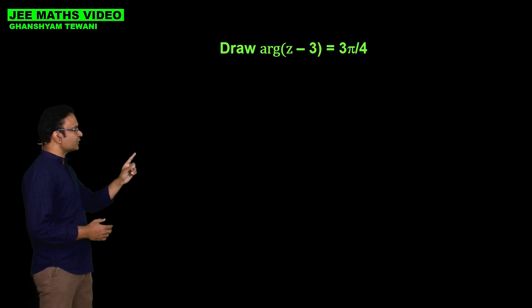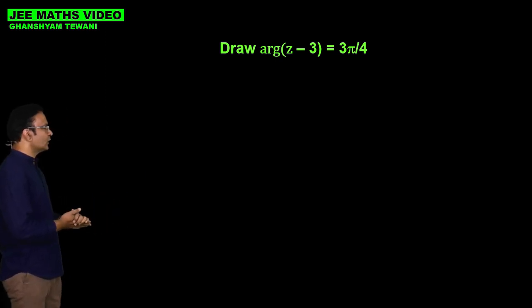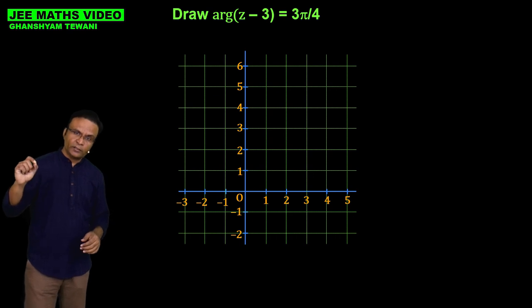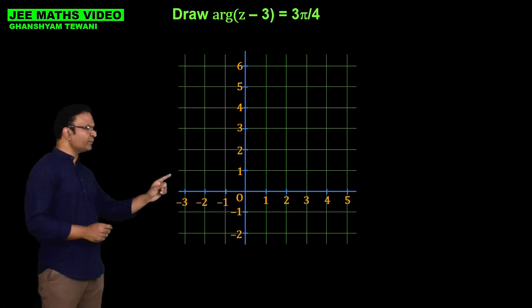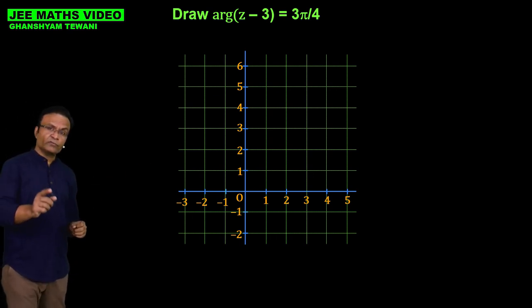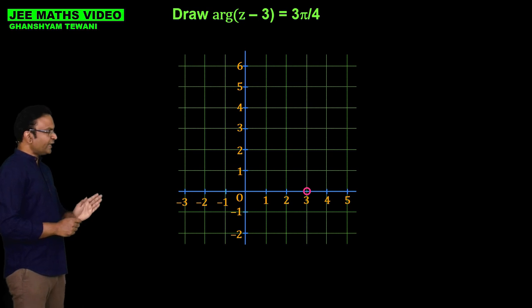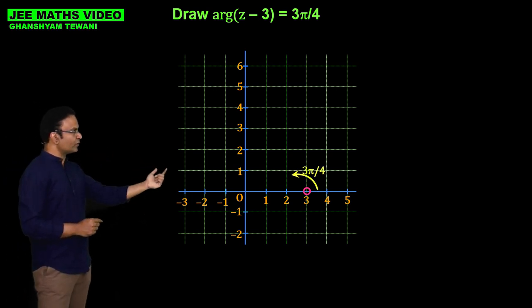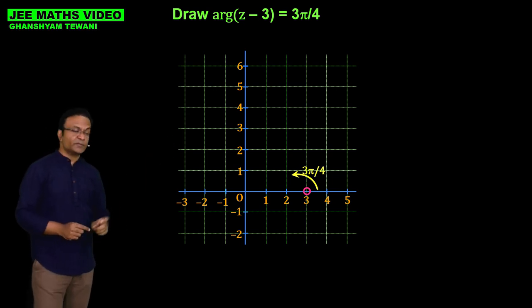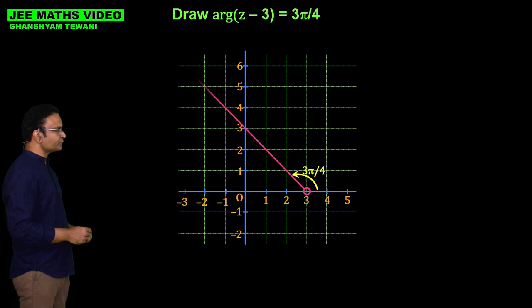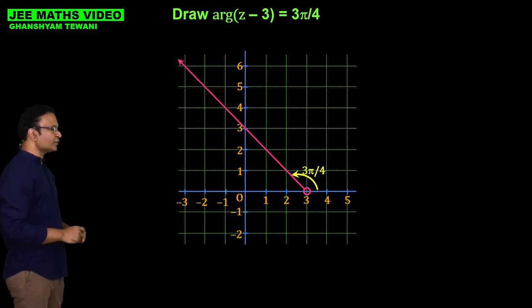Let us try plotting some rays with real examples. Draw the ray: argument of z minus 3 equals 3π/4. The starting point of this ray is 3 on the real axis, but we exclude this point, so we put a blank point at 3. The ray makes an angle of 3π/4 with the positive real axis, so the ray goes in that direction into the second quadrant.